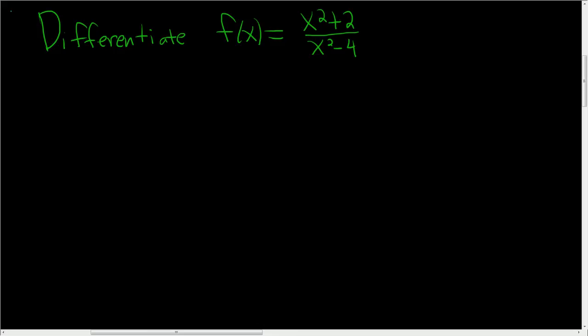You have to differentiate f of x equals x squared plus 2 divided by x squared minus 4. In this problem we have to use the quotient rule.